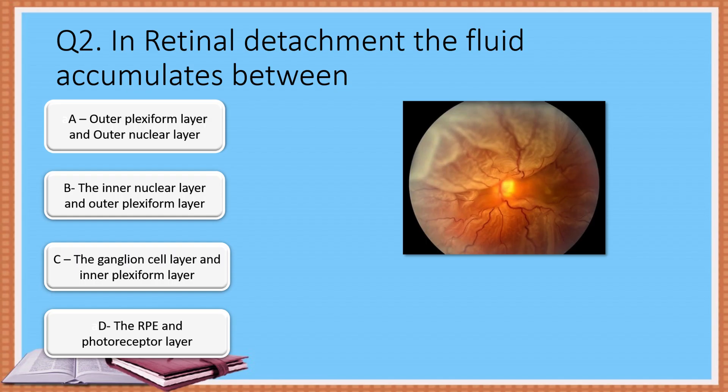Question number 2: In retinal detachment, the fluid accumulates between — Option A: Outer plexiform layer and outer nuclear layer. Option B: The inner nuclear layer and outer plexiform layer. Option C: The ganglion cell layer and inner plexiform layer. Option D: The RPE and the photoreceptor layer.